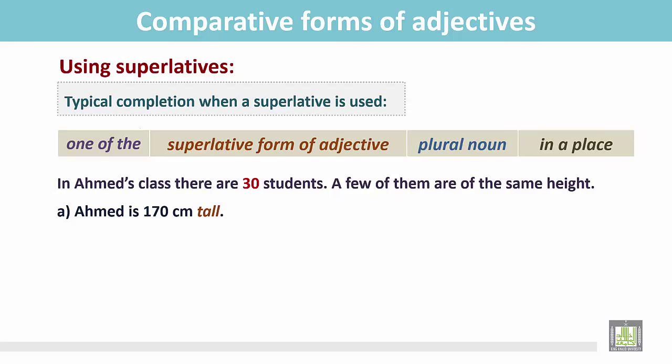Ahmed is 170 cm tall, Hassan is 168 cm tall, Ali is 167 cm tall, and Omar is 170 cm tall. Among the four students, we find Ahmed and Omar are of the same height.